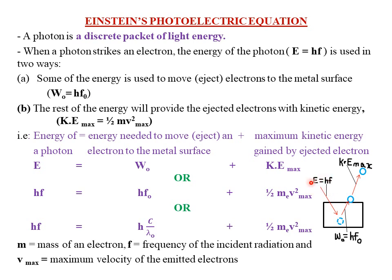The incident radiation has an energy equal to hf, where f is the frequency of the incident radiation. This energy is used in two ways. Some of the energy is used to eject electrons to the metal surface. Once an electron absorbs the photon energy, some of that energy is used to move the electron from the inner part of the metal to its surface. That minimum energy required to move an electron from inside the metal to its surface is what we call the work function.